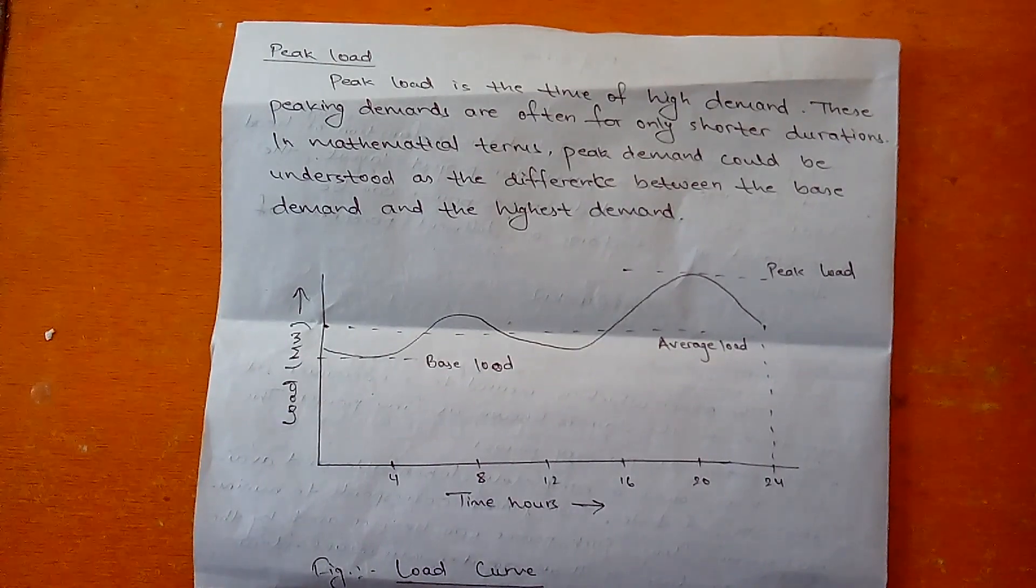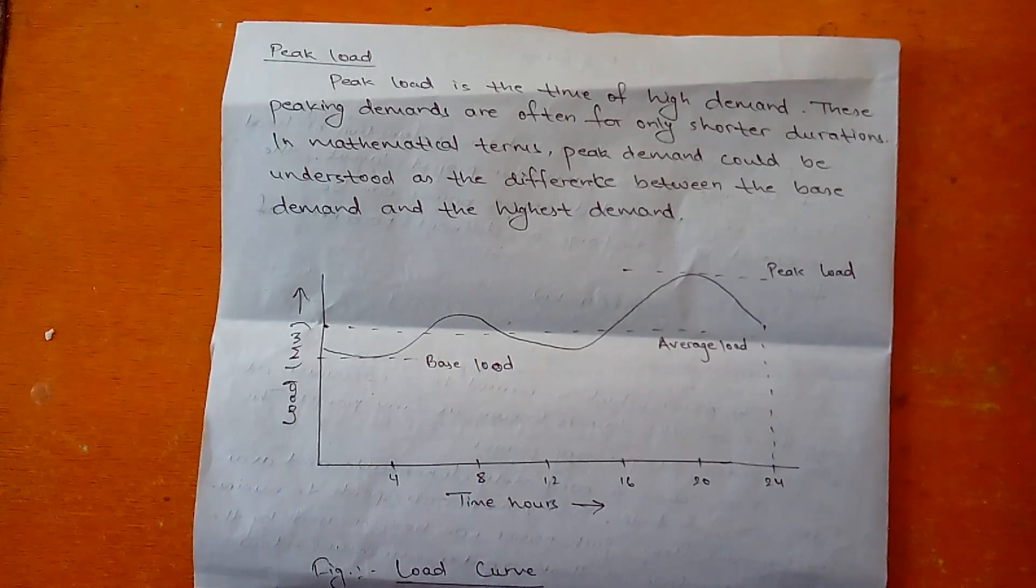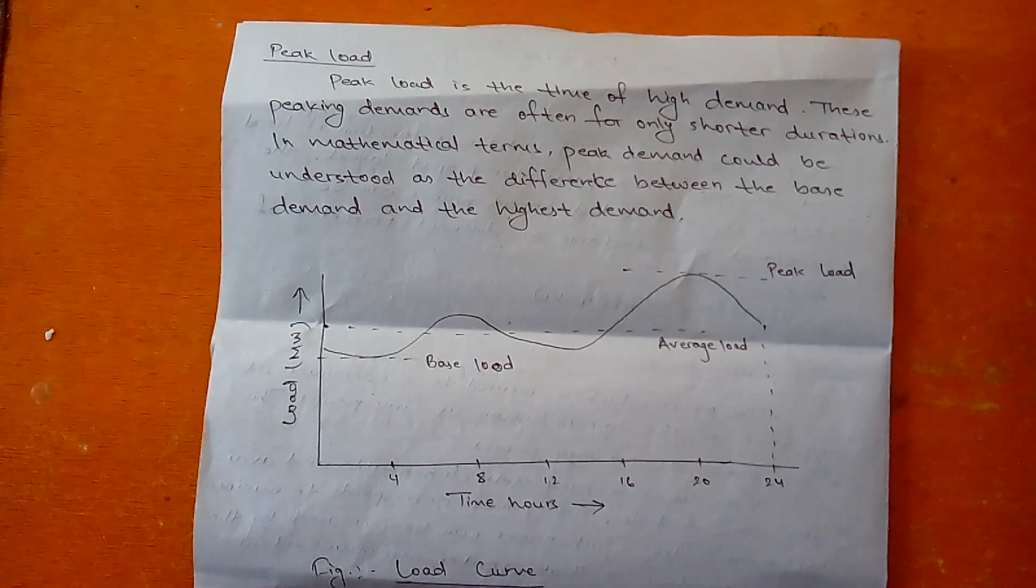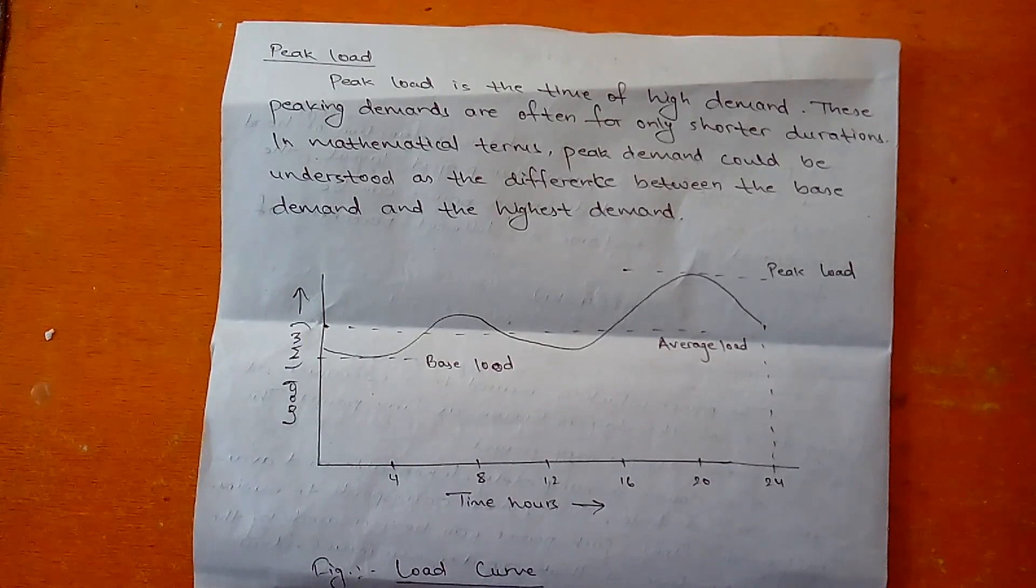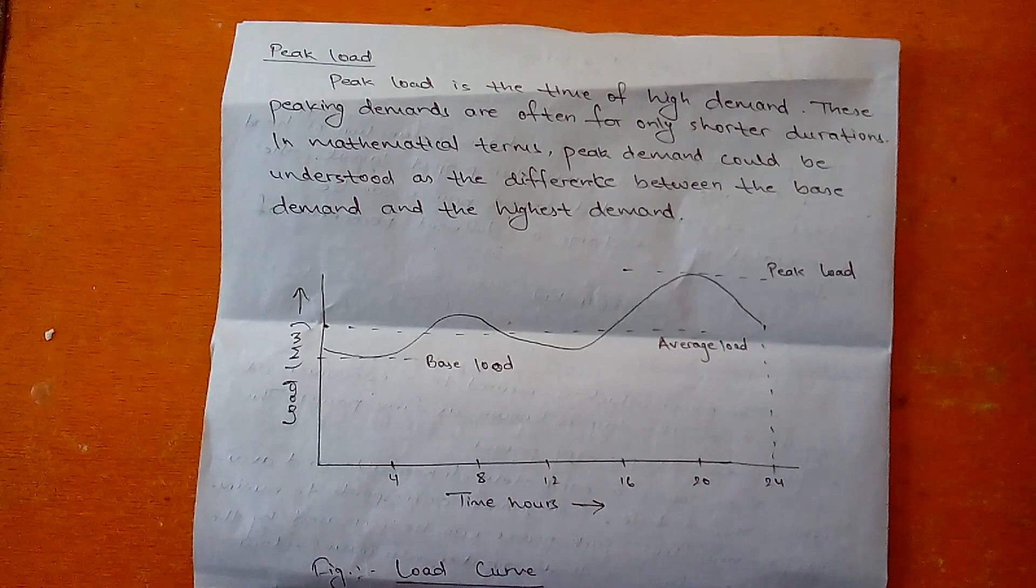Peak load is the time of high demand. As we all know, over a period of 24 hours, each hour does not require the same level of electricity. The demand varies according to the time, so this peaking demand is often for only shorter durations.